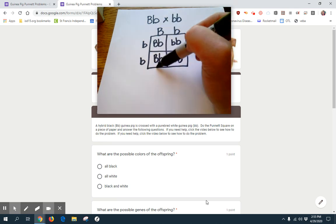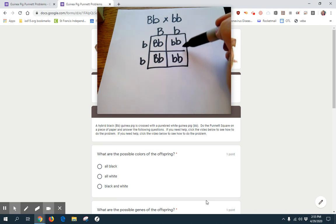So in this case, we get two out of four that will be hybrid black, and two out of four that'll be white. So we kind of get a 50-50 mixture here.